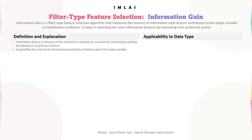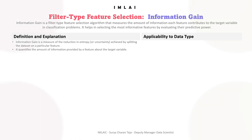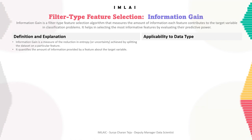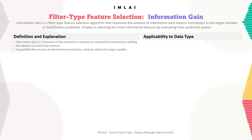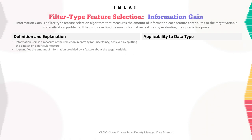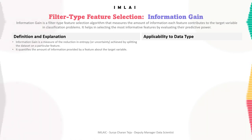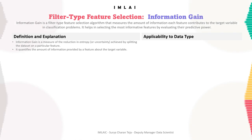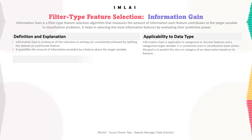Information gain is applicable to categorical or discrete features and a categorical target variable. It is commonly used in classification tasks where the goal is to predict the class or category of an observation based on its features.